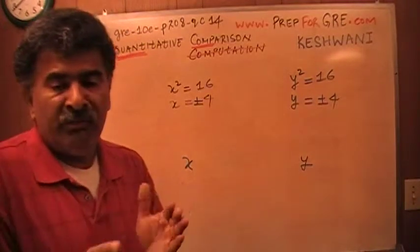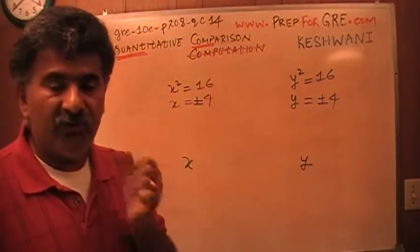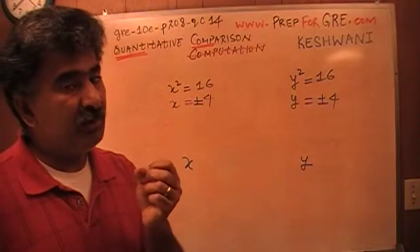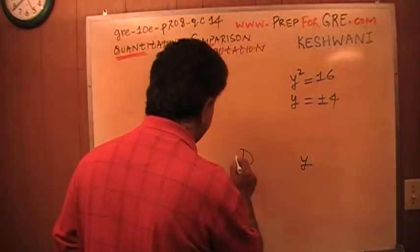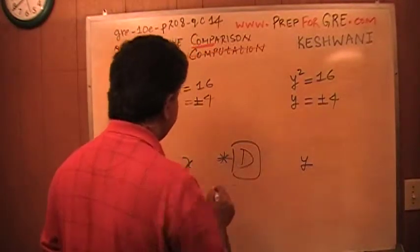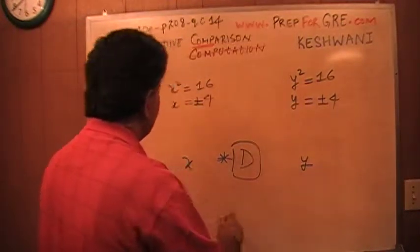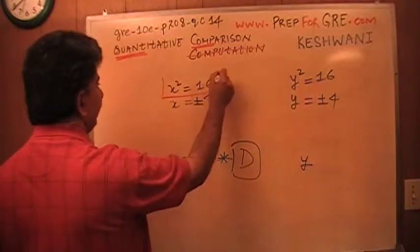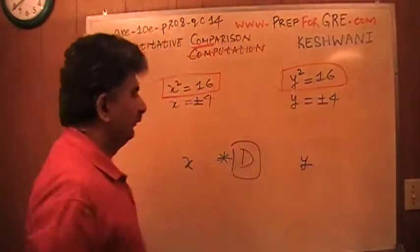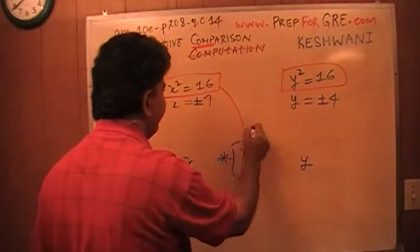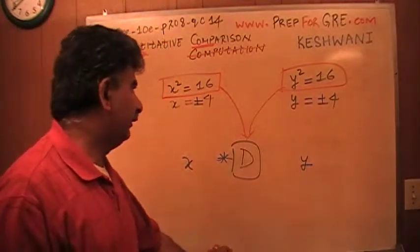So the possible answers are A, B, or C. Since we do not know which one it is, the answer is D — same as before. Despite the fact that on the surface it looks like we have been given the same information, the answer is still D.